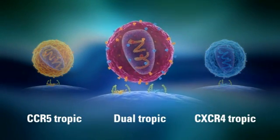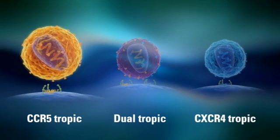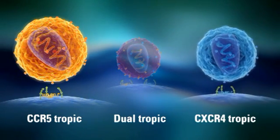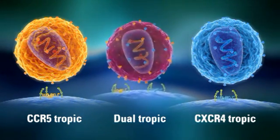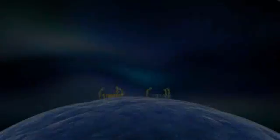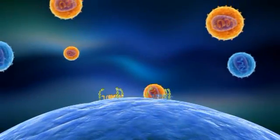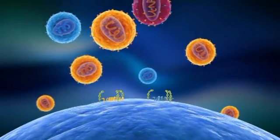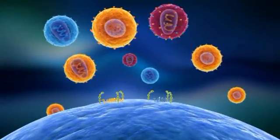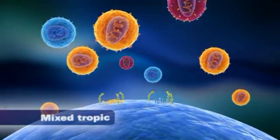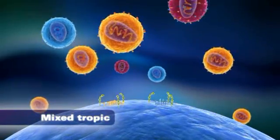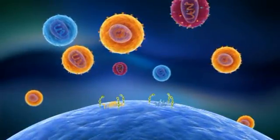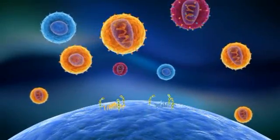A patient's HIV infection can thus be categorized as R5-tropic, X4-tropic, or dual-tropic. In cases where patients are infected with combinations of R5, X4, and/or dual-tropic virus populations, their infection is classified as mixed-tropic. Dual-tropic and mixed-tropic HIV infections are categorized as dual-mixed-tropic.